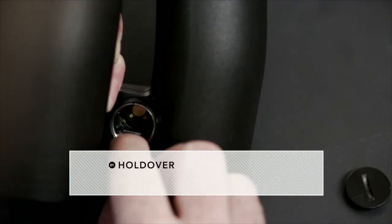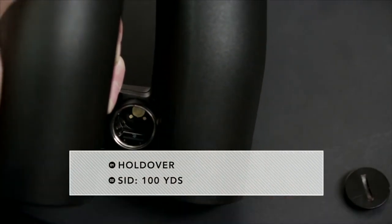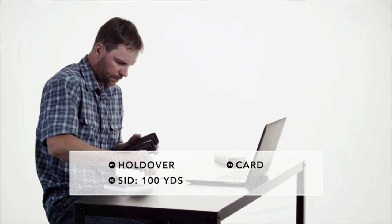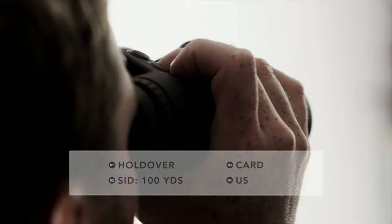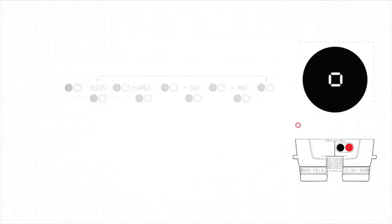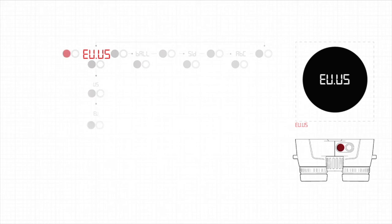Let's walk through a full setup using Holdover, a sight in distance of 100 yards, selecting card for our ballistic curve and US as our unit of measure. First, hold down the secondary button for 3 seconds. Then press the measurement button to access the EU-US menu. Then press the secondary button to select US.